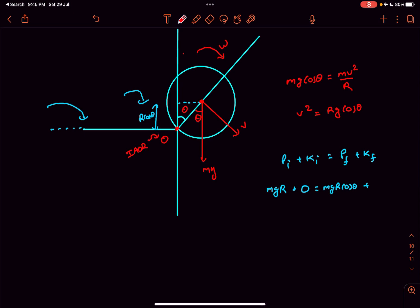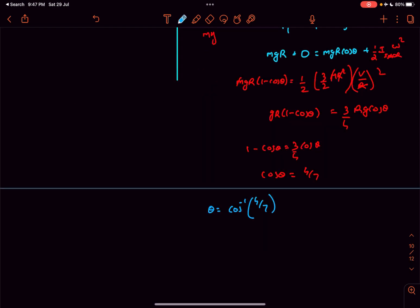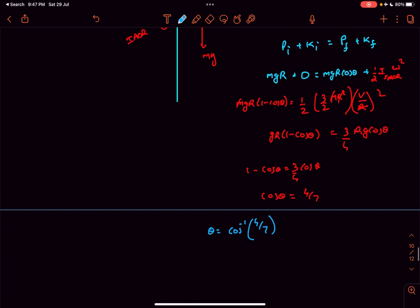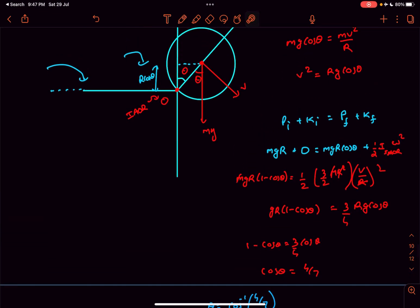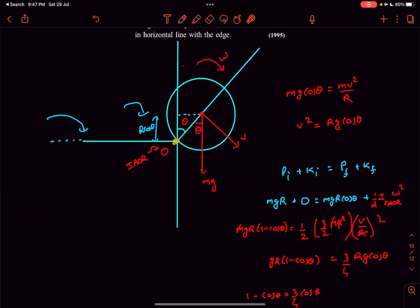Point o is the instantaneous axis of rotation so we can simply write the final kinetic energy as half i about instantaneous axis of rotation times omega squared. The i about the instantaneous axis of rotation as this is a disk its moment of inertia about the center is mr squared by 2. We have to add another mr squared component to it so it will be 3 by 2 mr squared and the omega as it is pure rolling we can write it as v divided by r the whole squared and after solving this you'll get the value of theta as cos inverse of 4 by 7. So this is the angle at which the cylinder leaves contact with this point o.